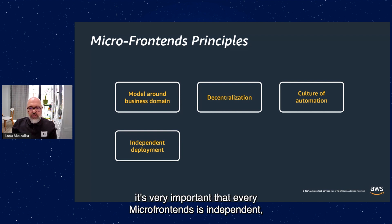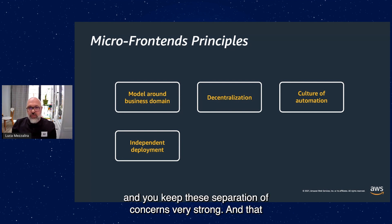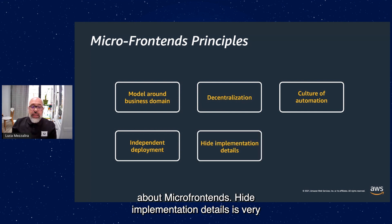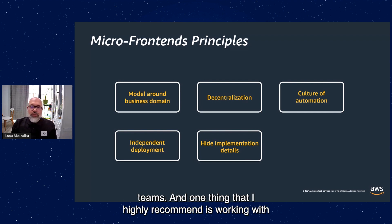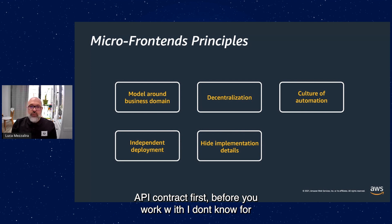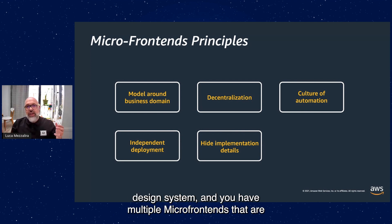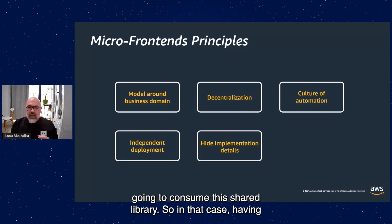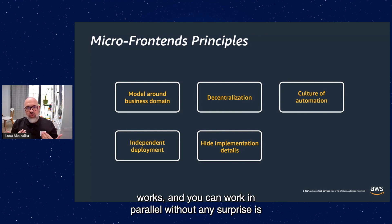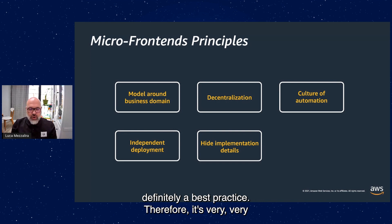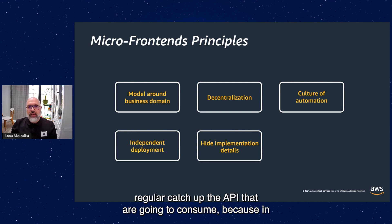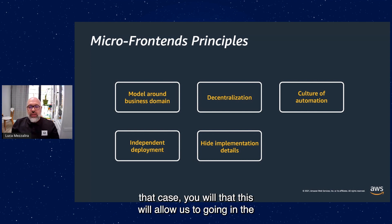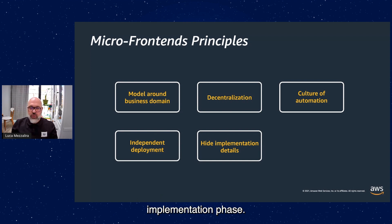Independent deployment is very important — every micro-frontend is independent and you keep this separation of concern very strong. That will allow you to work at speed with micro-frontends. Hiding implementation details is also important. In any software you need communication between different parts and teams. I highly recommend working with an API contract-first approach. Imagine a team responsible for the design system with multiple micro-frontends consuming it — having regular catch-ups to understand how the contract works allows you to work in parallel without surprises. Define the API they are going to consume with regular catch-ups, and this will allow everyone to go in the same direction and not find surprises during the implementation phase.